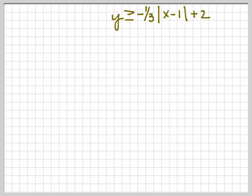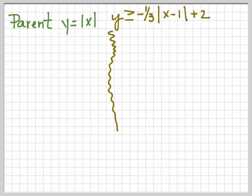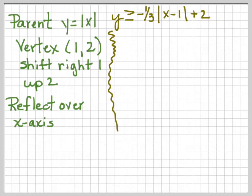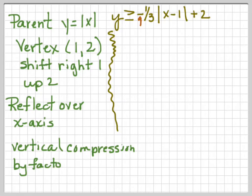Let's do one that's a little more difficult: y is greater than negative one-third absolute value of x minus 1 plus 2. The parent is y equals absolute value of x. The vertex is at 1, 2 — it shifts right 1 and up 2. It reflects over the x-axis because there's a negative out in front of that one-third. And it's a vertical compression by a factor of one-third because we've multiplied by one-third.